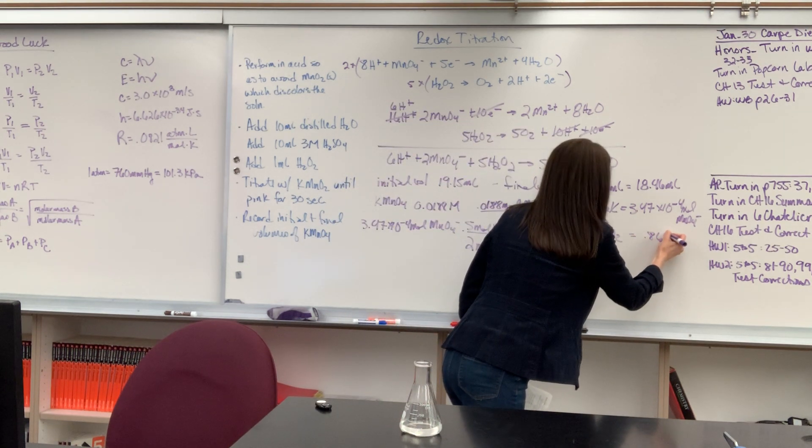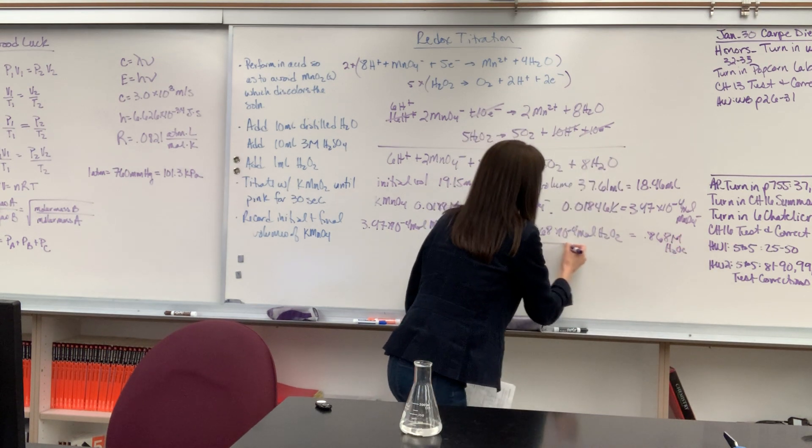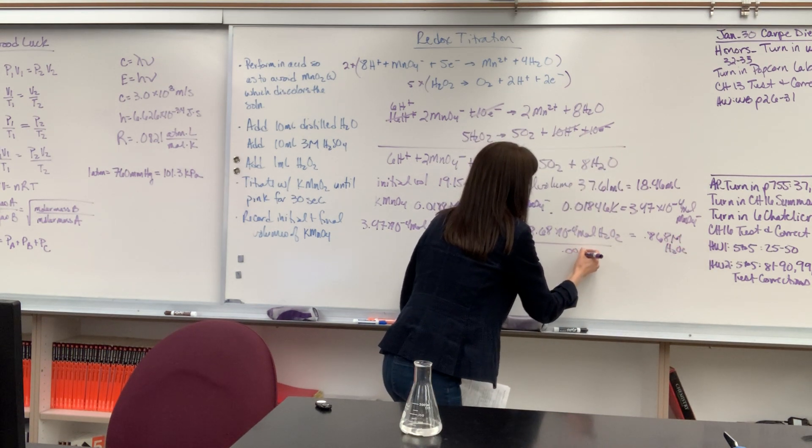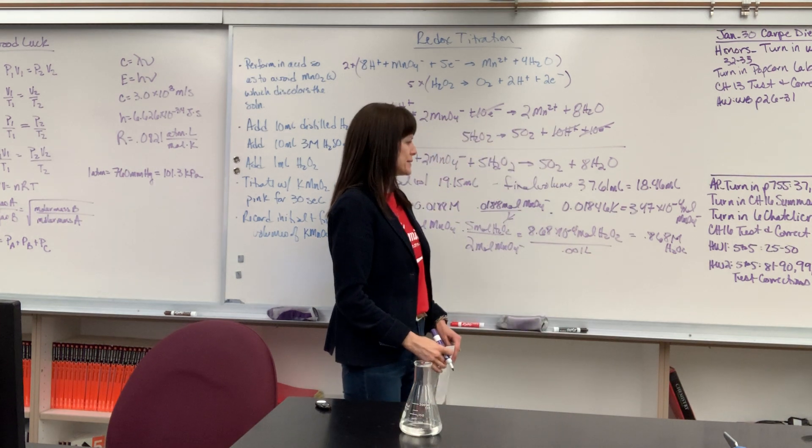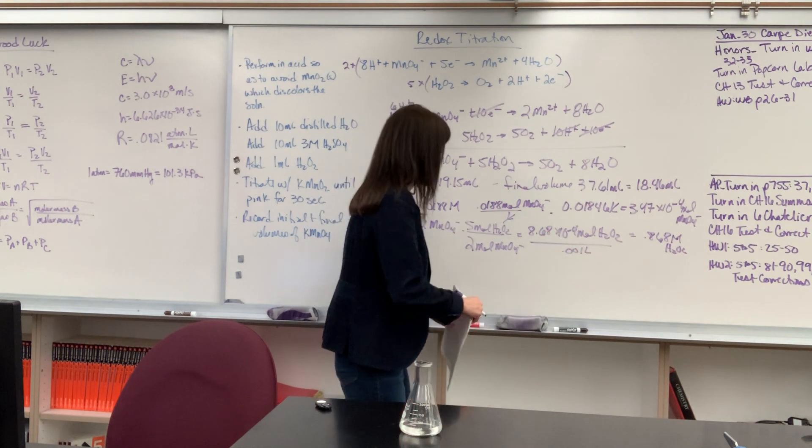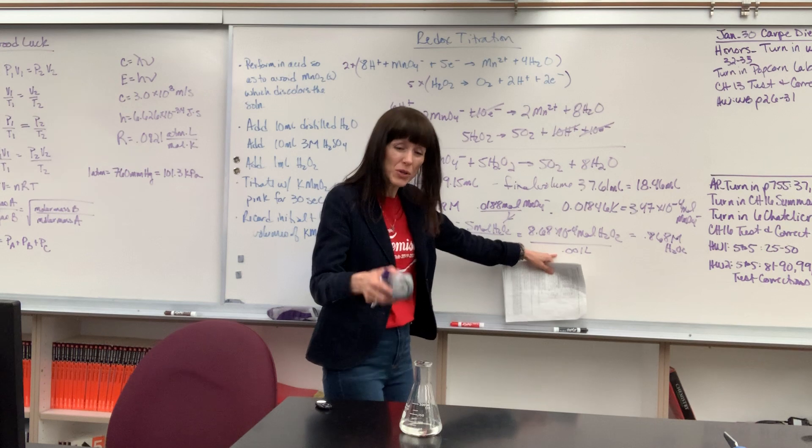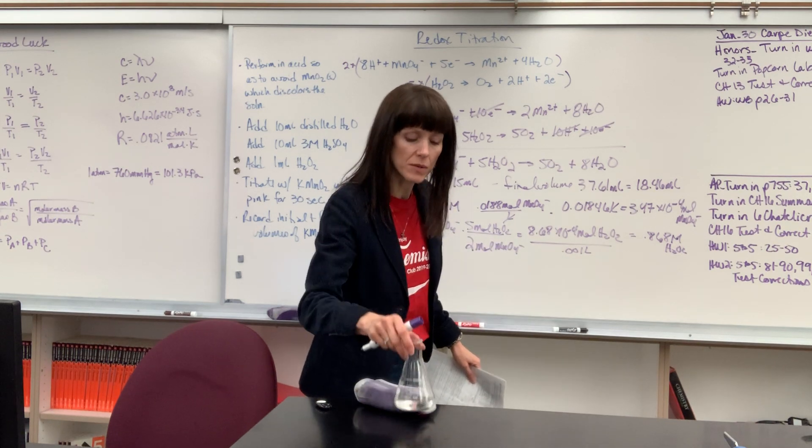And that would give me a 0.868 molar H2O2. Let me write that down. If I just divided it by 0.001 liters, that would give me the molarity. So there's the molarity. Great. If you need to find molarity, just take the moles divided by the volume that you started with, the volume that you started with.